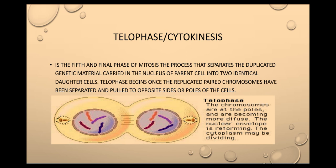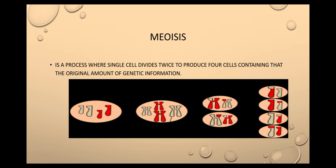Now, let us move on to meiosis. Meiosis is a process where a single cell divides twice to produce four cells containing half the original amount of genetic information.